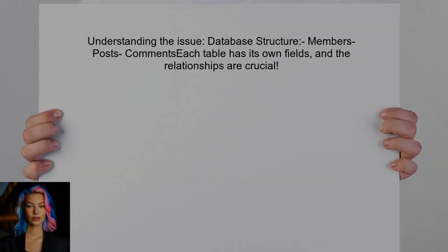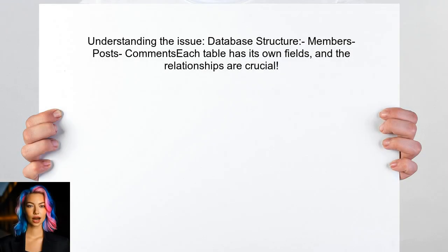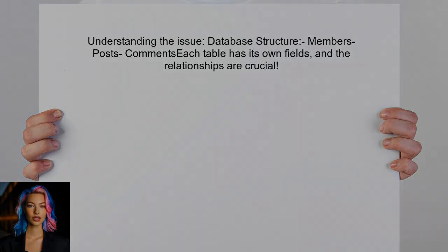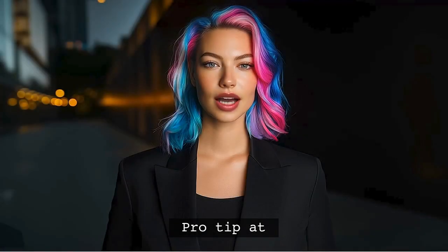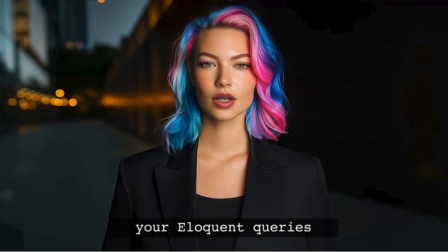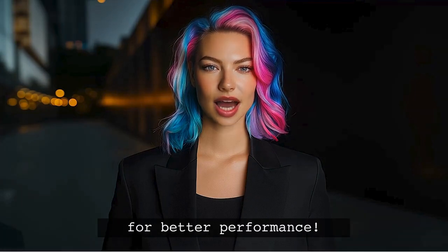To understand the issue, we need to look at the database structure. You have three tables: members, posts, and comments. Each table has its own fields, and the relationships between them are crucial for fetching the data correctly. Stick around, because at the end of this video, I'll share a pro tip that will help you optimize your Eloquent queries for even better performance.